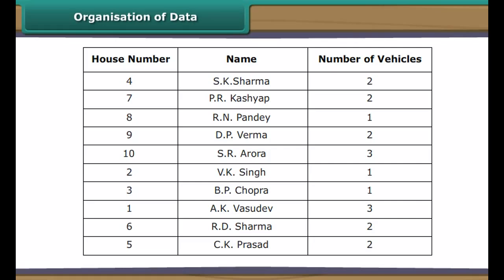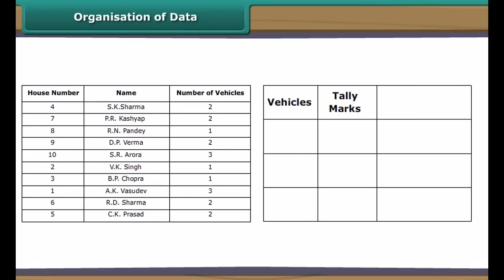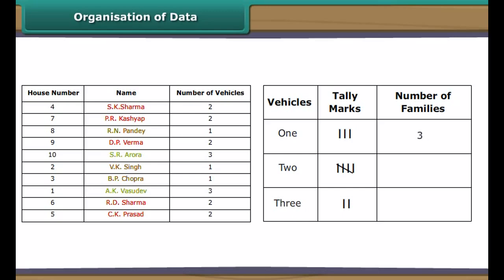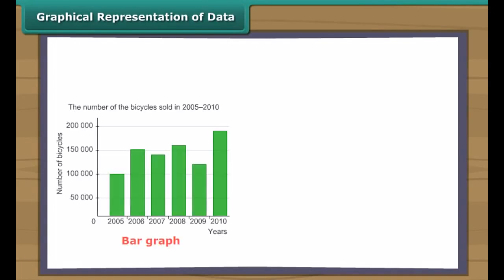Let us now organize the RWA data. Make three columns: vehicles, tally marks, and number of families. Specify 1, 2, and 3 under vehicles one by one. Under tally marks, denote families with a specific number of vehicles by tally marks against appropriate options. Count the tally marks against every option and record it under number of families.